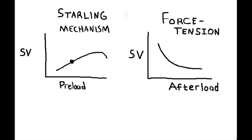It's the Frank-Starling mechanism, which states that stroke volume increases in response to an increased preload — otherwise known as LV end-diastolic volume (LVEDV). More volume in the ventricle means more stretch on the ventricle, and this causes the cardiac muscles to contract more forcefully. That is the Frank-Starling mechanism — the heart's intrinsic way of synchronizing cardiac output with increased venous return.